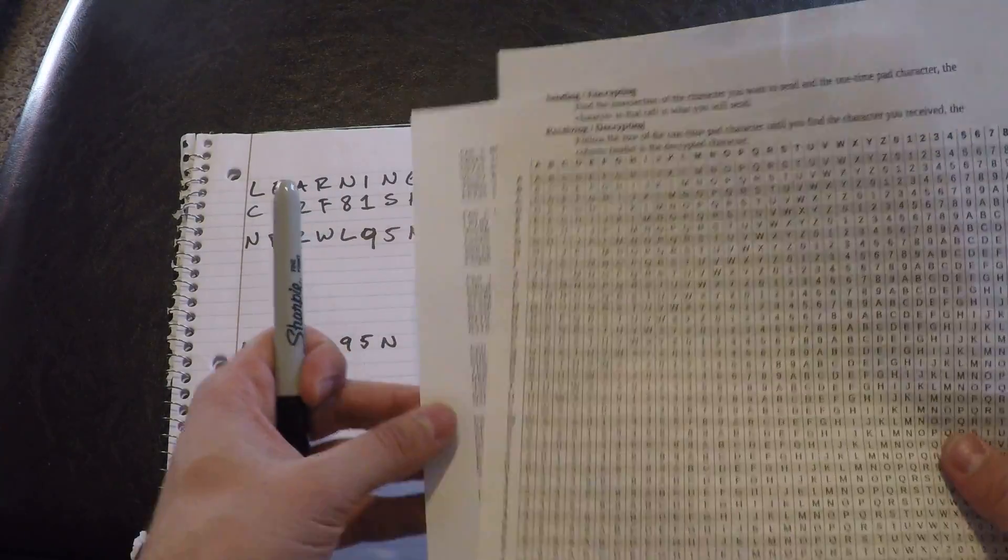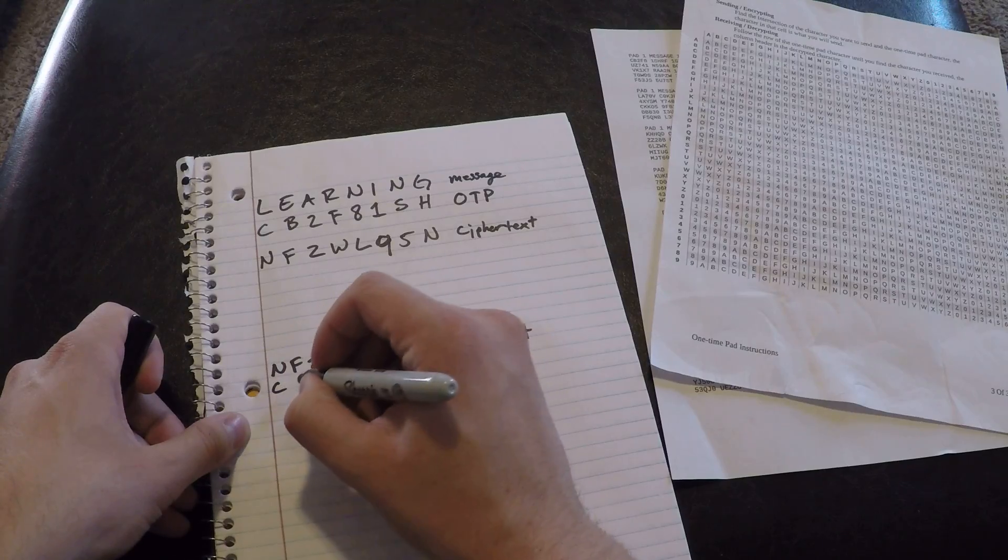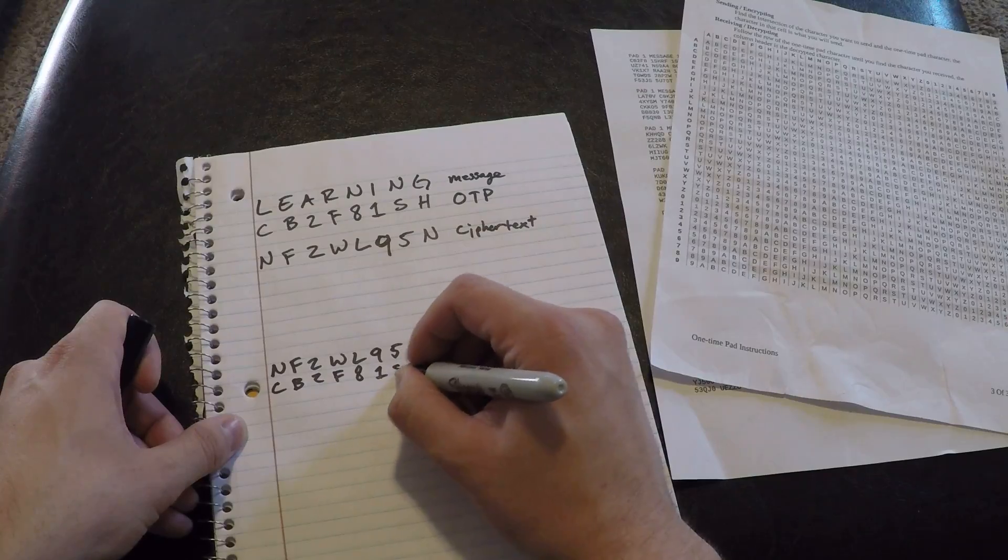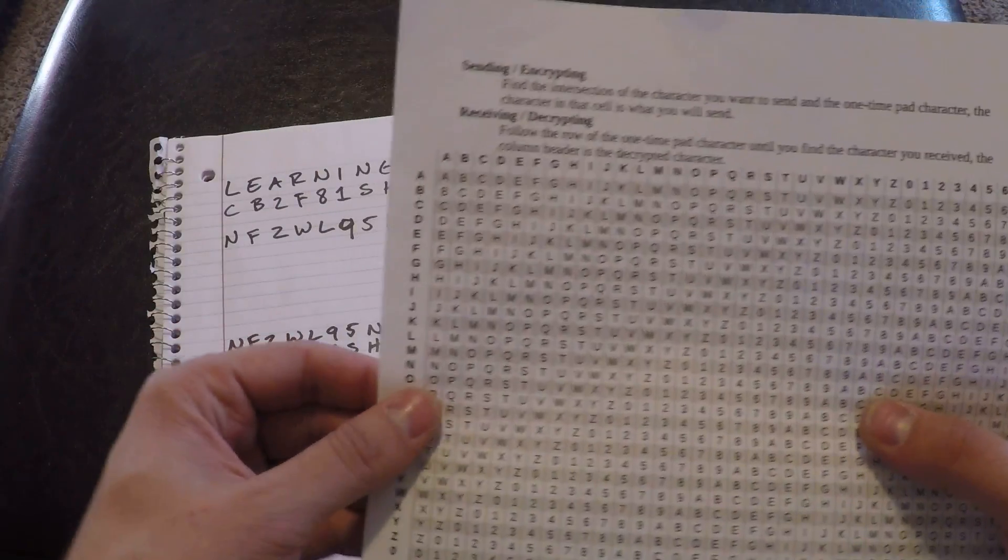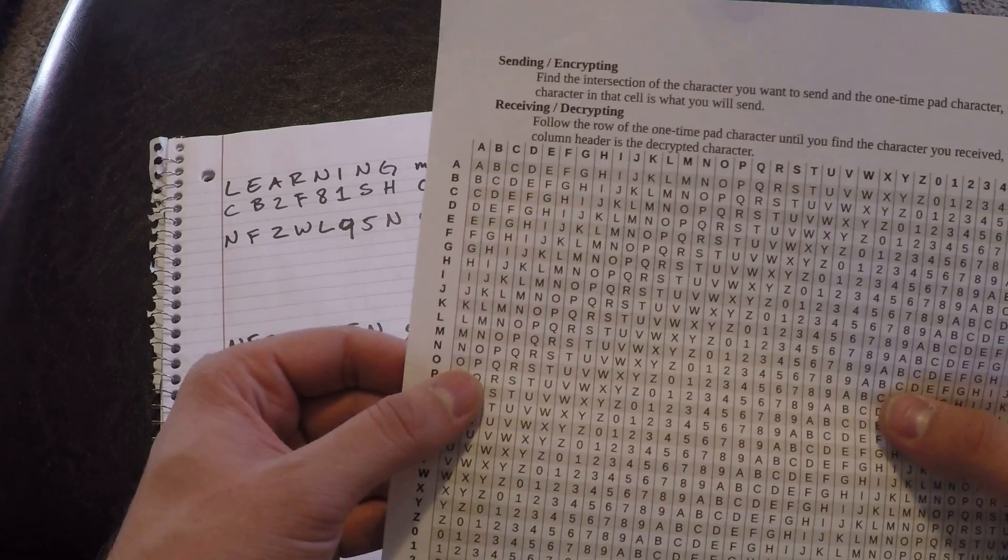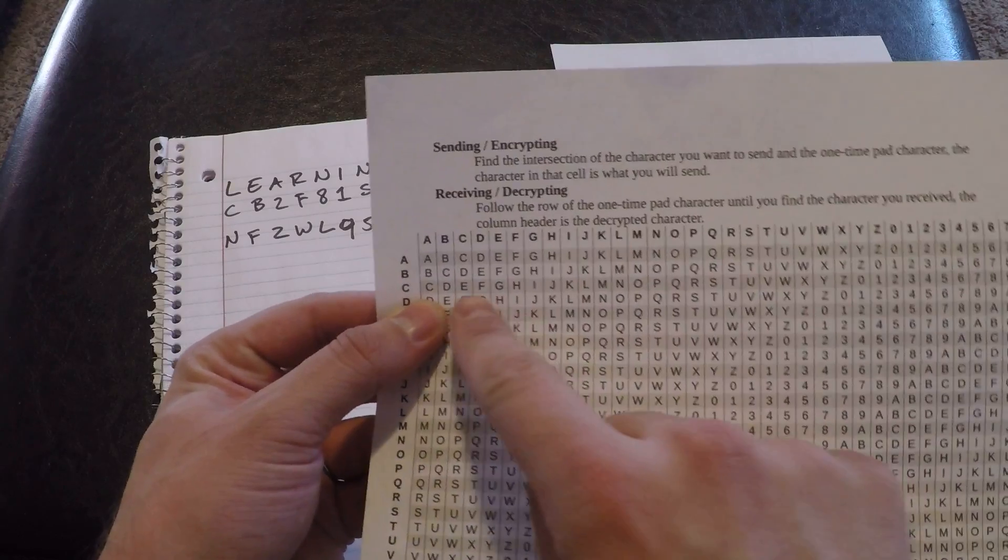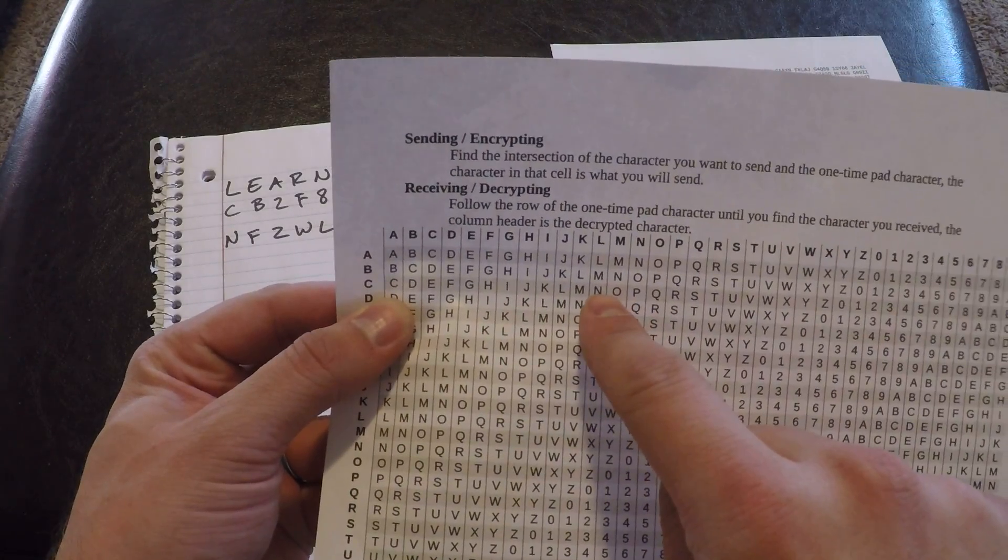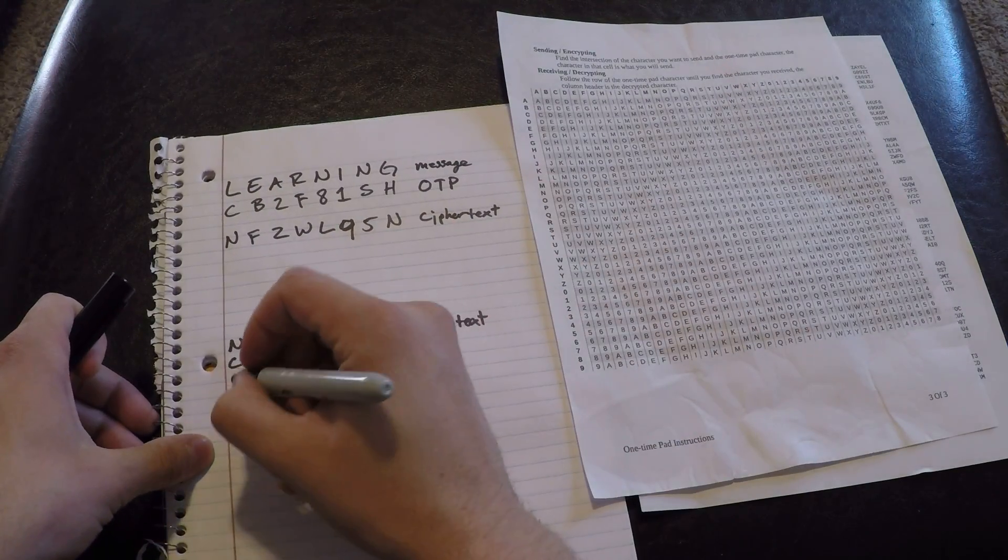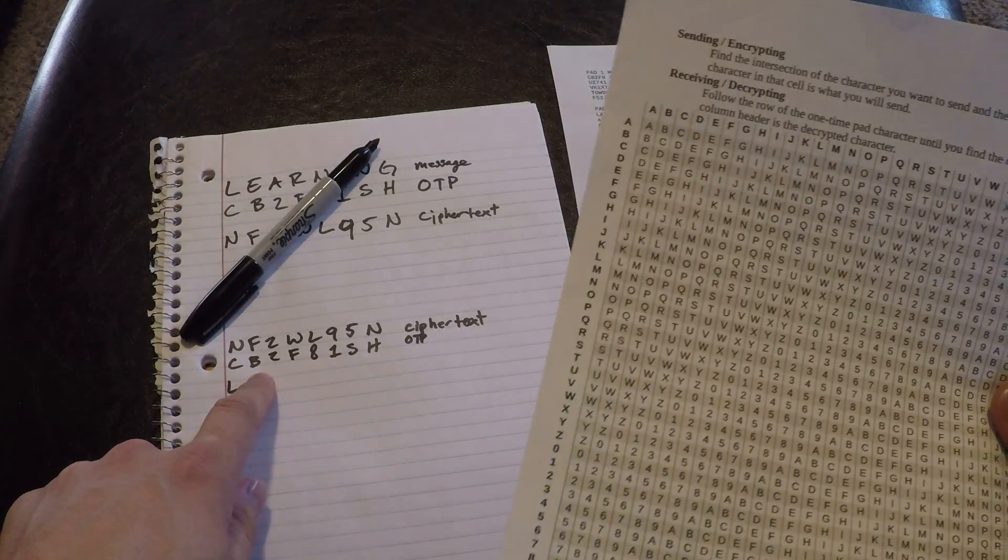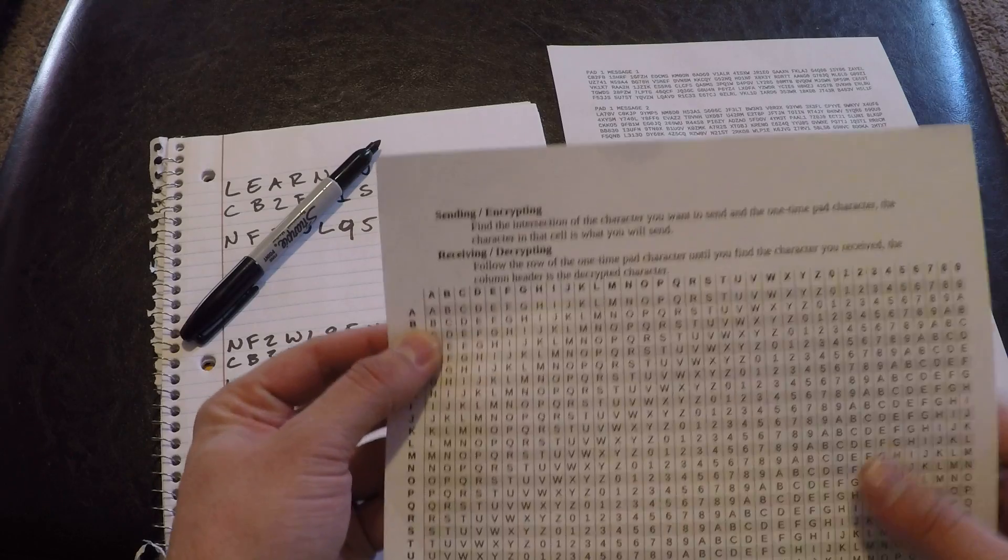And then I need to put my one-time pad characters right next to it, which are C, B, 2, F, 8, 1, S, H. Decrypting's nice and simple. We're going to follow the one-time pad characters row. So the one-time pad character is C. We're going to take C here. We're going to go over until we find the character we received, which is N. The column header, L, is what's decrypted as.